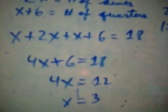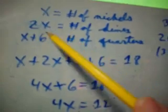Now, what did we say x was originally? We said that x was the number of nickels. Well, if we multiply 3 times 2, we get 6, so that's the number of dimes that we have. And if we add 3 plus 6, we have 9 quarters because that's the number of quarters that we have.